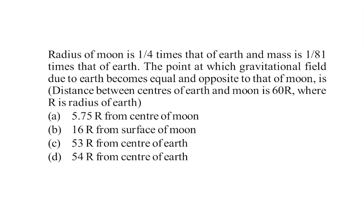Look at this question based on gravitation. Radius of moon is 1/4 times that of earth, and mass is 1/81 times that of earth. The point at which gravitational field due to earth becomes equal and opposite to that of moon... distance between the centers of earth and moon is given as 60R.